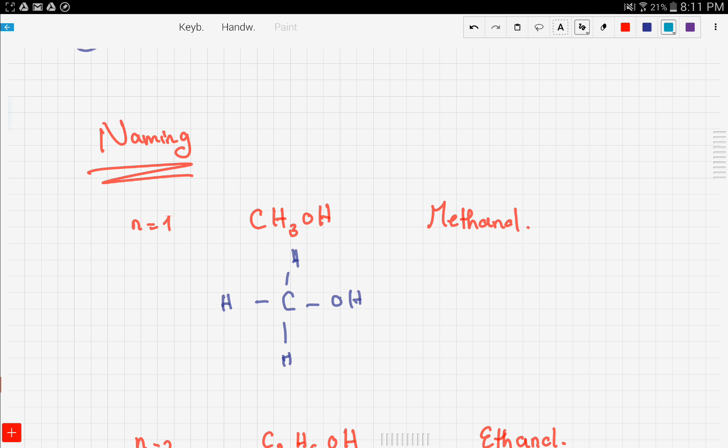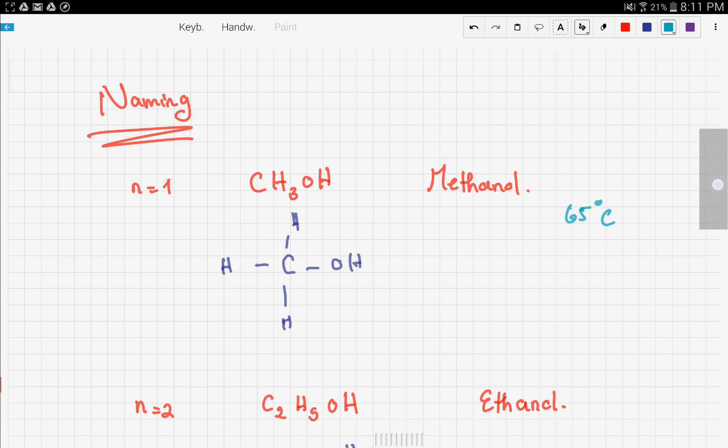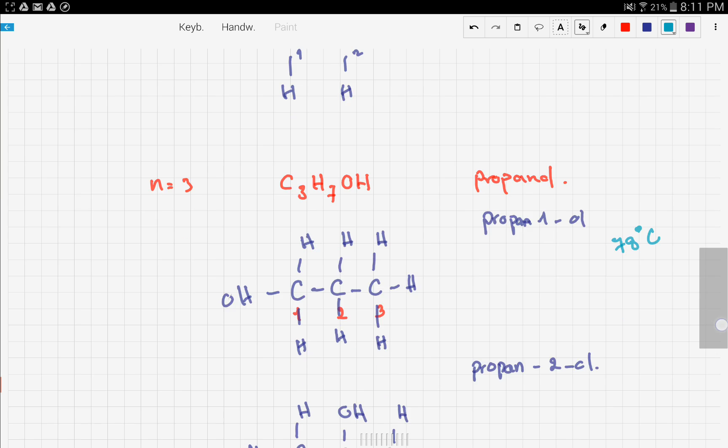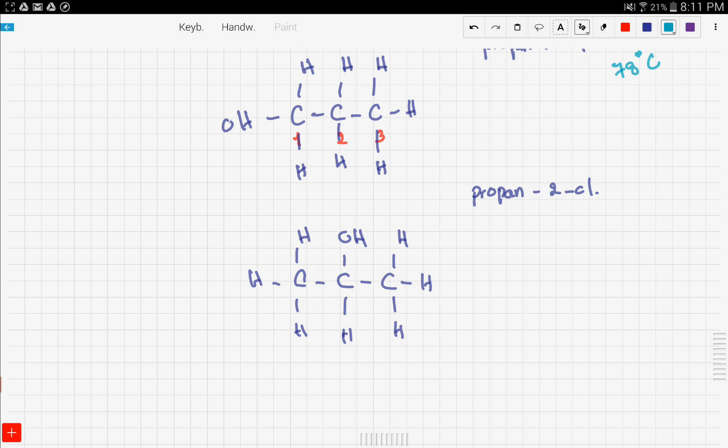These three members of the family differ in their boiling point. For example, methanol has a boiling point of 65 degrees Celsius, while ethanol has a boiling point of 78 degrees Celsius. See how the boiling point increases? Finally, propanol has 87 degrees Celsius. As the structure expands and goes bigger, the boiling point rises.